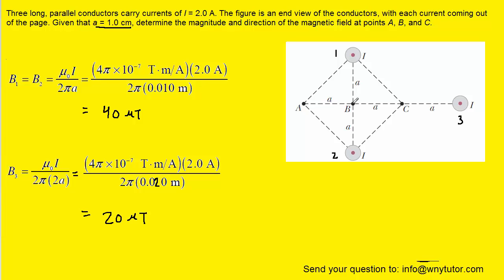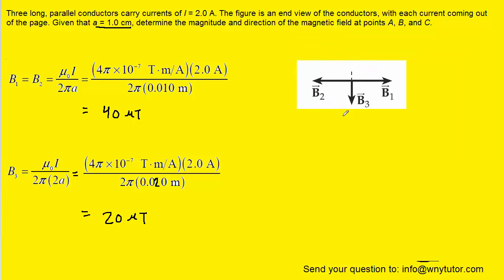Now we consider the direction at point B. The magnetic fields are all still traveling counterclockwise. Wire 1 produces a magnetic field pointing exactly to the right, while wire 2 going counterclockwise produces a magnetic field pointing exactly to the left — so those cancel out. Wire 3 produces a counterclockwise magnetic field pointing straight down. Since B1 and B2 have equal magnitudes but opposite directions, they cancel. Therefore, the only remaining field at point B is from wire 3: 20 microtesla directed towards the bottom of the page.